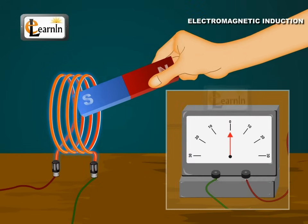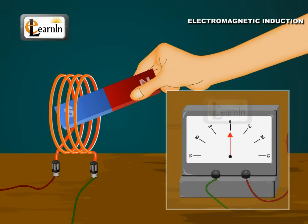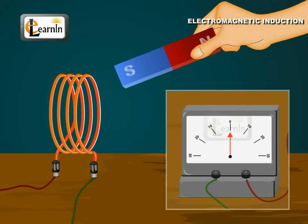If you hold the magnet with its south pole facing the coil and repeat the above steps, the deflections are again observed but are reversed.